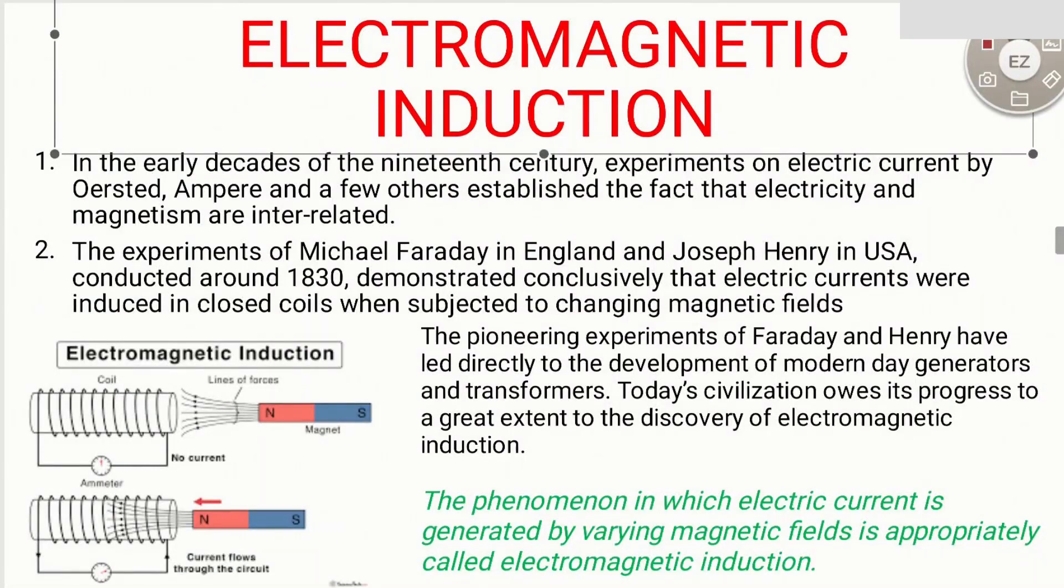Hello and welcome to today's class on electromagnetic induction. As we have already studied in Class 10, when current is passed through any conductor, it mainly produces two kinds of effects: one is the heating effect, termed as Joule's heating effect, which is due to internal resistance, and the other is the magnetic effect.